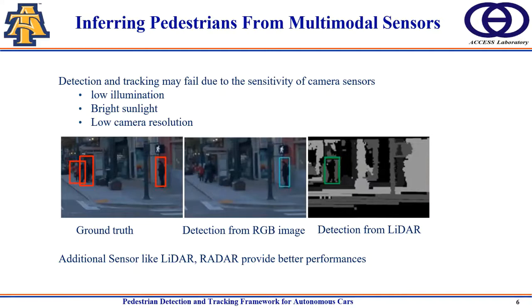Therefore, the best result can be achieved by combining the two independent results from both sensors into a joint prediction.